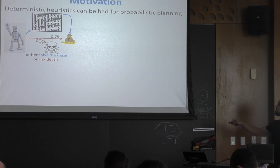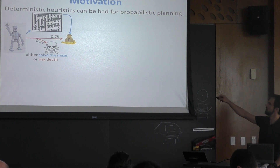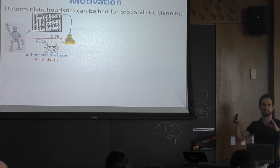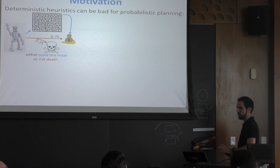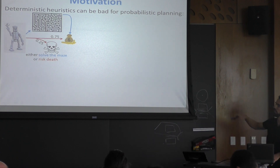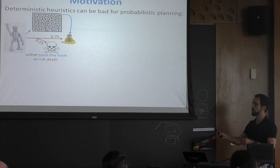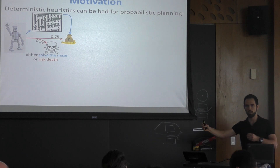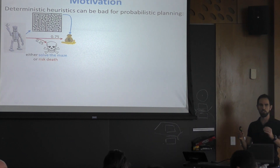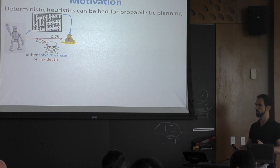The motivation for this talk is this little example. Imagine you have a little robot and you want to get to the gold, and you have two options. You can solve this maze — representing something computationally very costly — or you have this other action that's straightforward, gets you where you want to go, but with probability 0.25 you're going to die. The robot is going to explode.